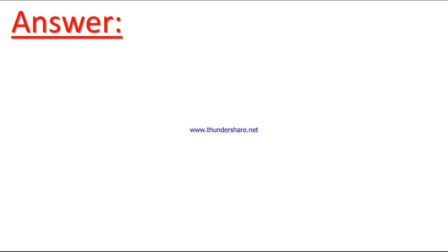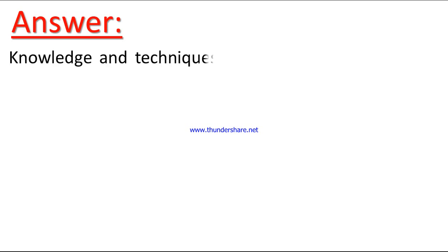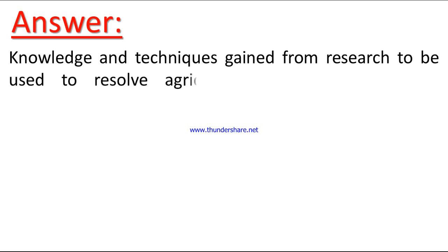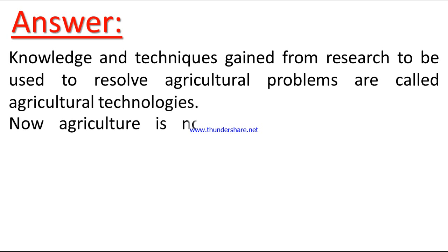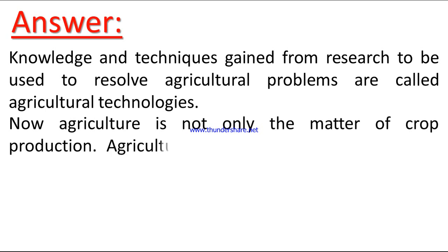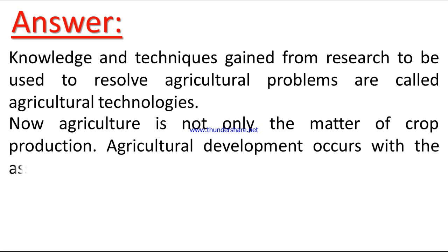Answer 1: Knowledge and techniques gained from research to be used to resolve agricultural problems are called agricultural technologies. Answer 2: Agriculture is not only the matter of crop production — agricultural development occurs with the association of several production areas.